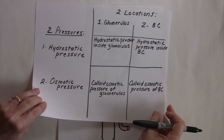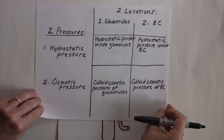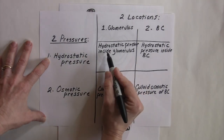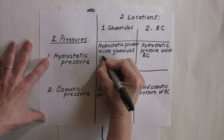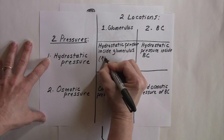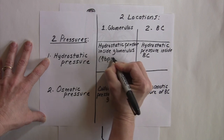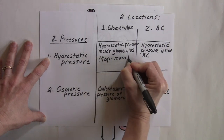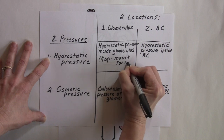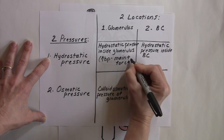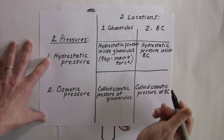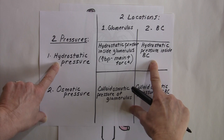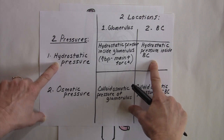Looking back at the chart, the hydrostatic pressure inside the glomerulus — this high blood pressure — is the main positive force driving filtration. Now let's take a look at the hydrostatic pressure inside Bowman's capsule.